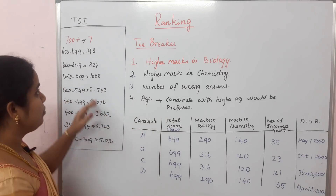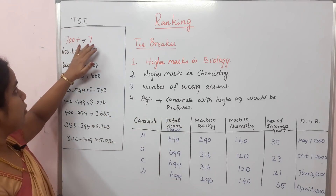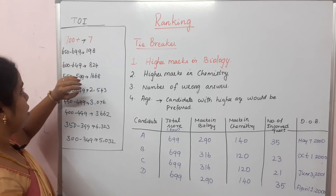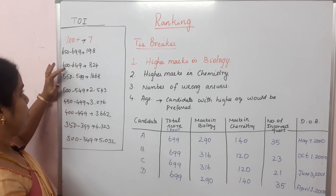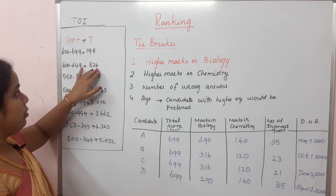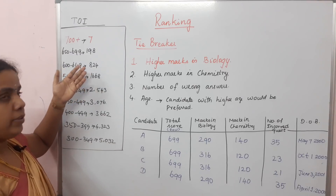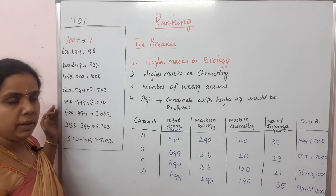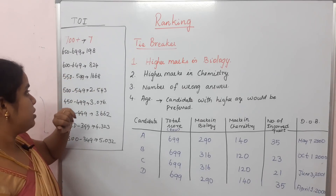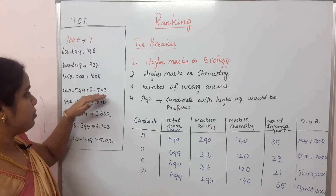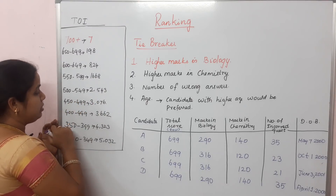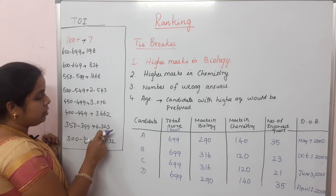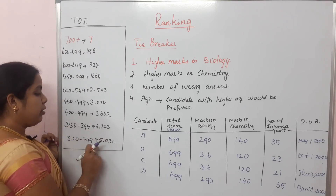How is the rank list prepared? According to a Times of India report, we have 828 students. We have 824 students in Tamil Nadu with a mark of 40. In the range 599-550, we have 546 students; 500-549, 2543 students; 450-499, 3076 students; 400-449, 3662 students; 350-399, 4323 students; 300-349, 5032 students.